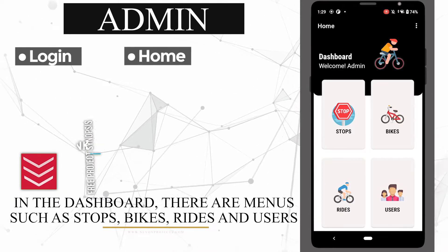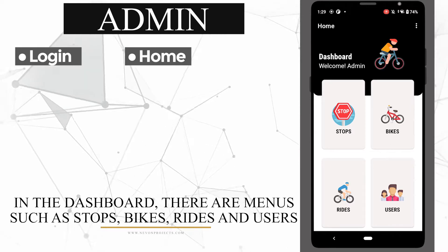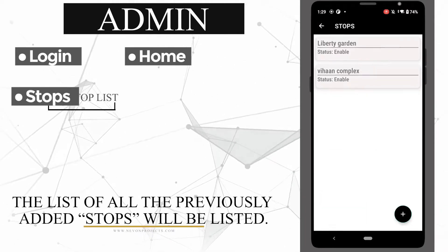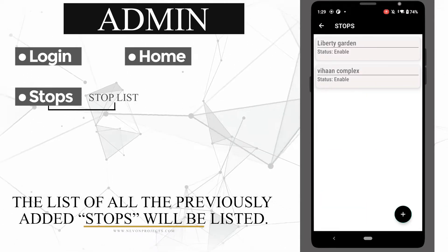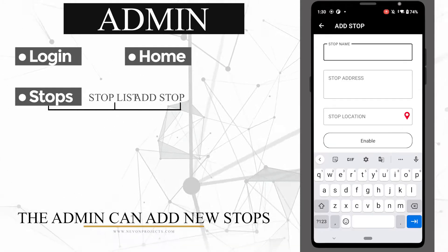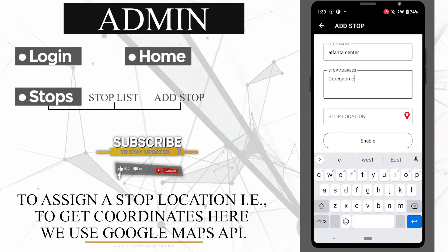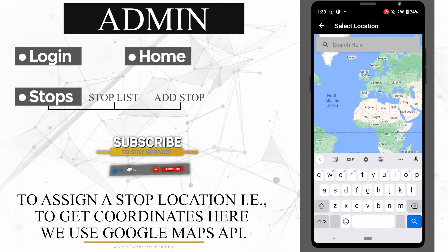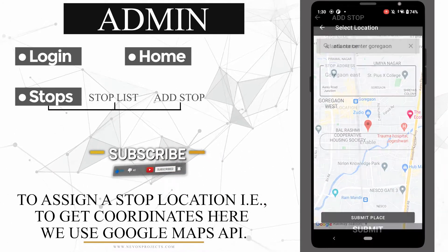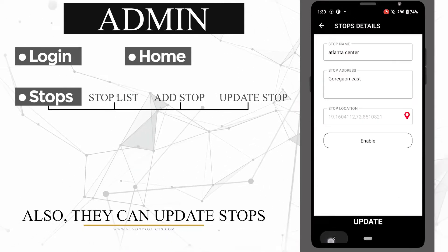In the dashboard, there are menus such as stops, bikes, rides, and users. The list of all previously added stops will be listed. The admin can add new stops. To assign a stop location and get coordinates, we use the Google Maps API. The admin can also update stops.